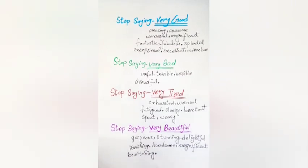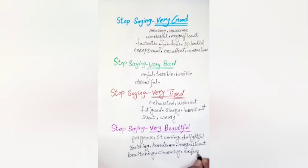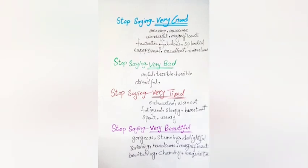Some of these are more formal than others, like 'prepossessing' and 'ravishing.' By the way, prepossessing is not just used to indicate beauty — it could also mean interesting or impressive. Also, some of these words are used in different contexts. For example, 'handsome' is typically used just for men. Some examples: you look stunning in that dress. What a delightful evening.